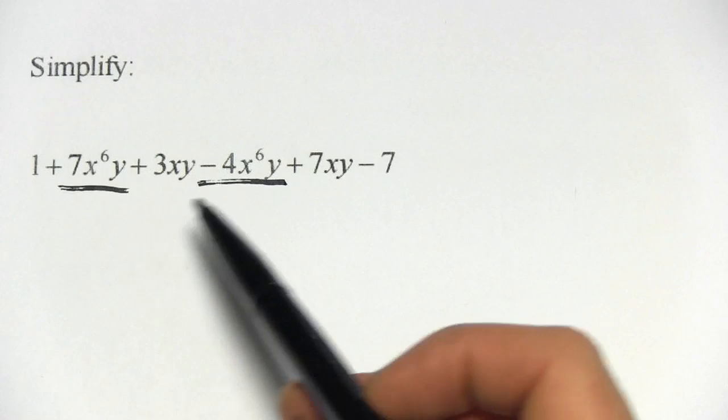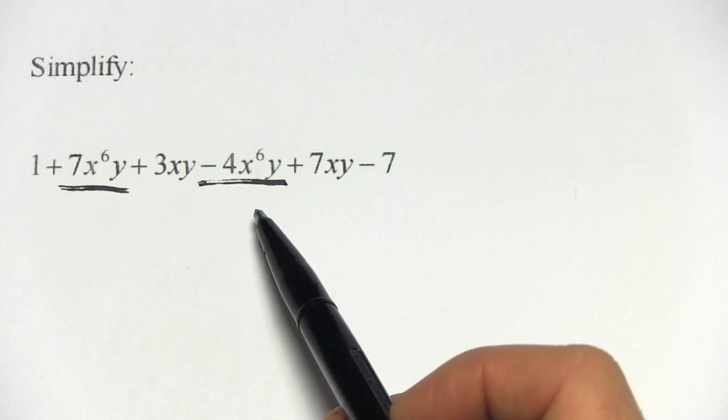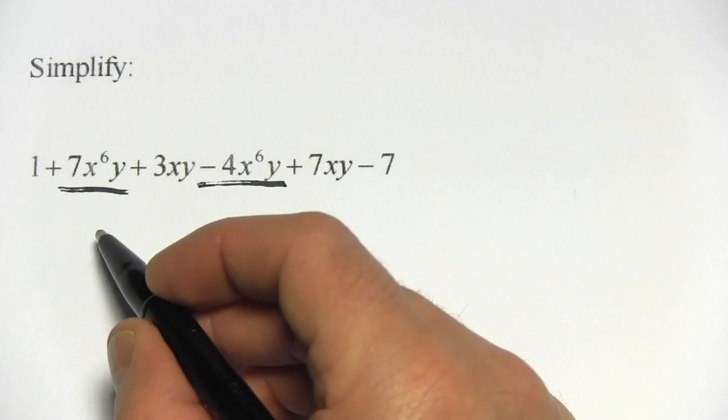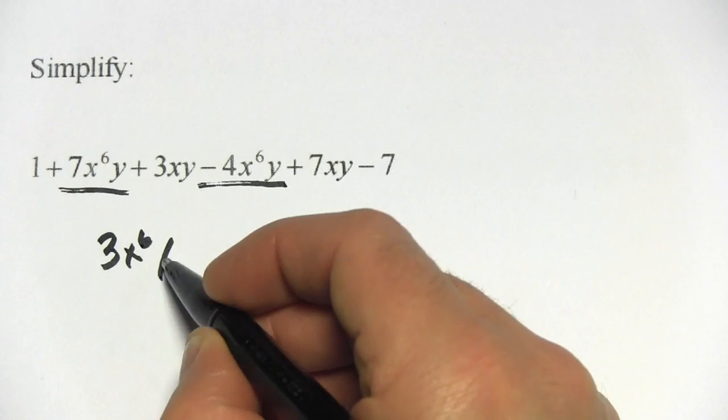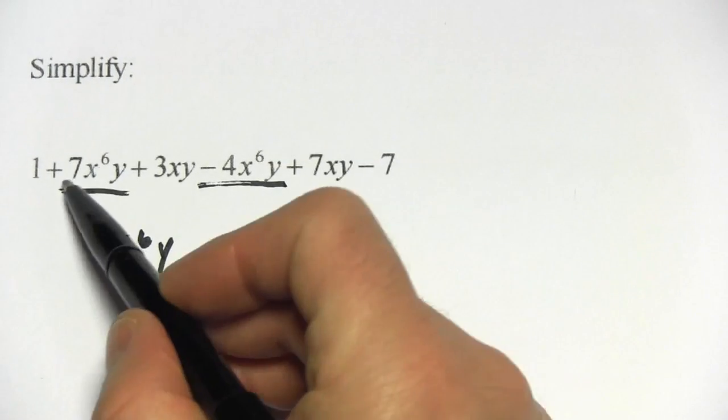Now let's go ahead and combine those. We have a positive 7 and a negative 4x to the sixth y. So that's going to be a 3, just adding the 7 and the negative 4x to the sixth y. So that part is done.